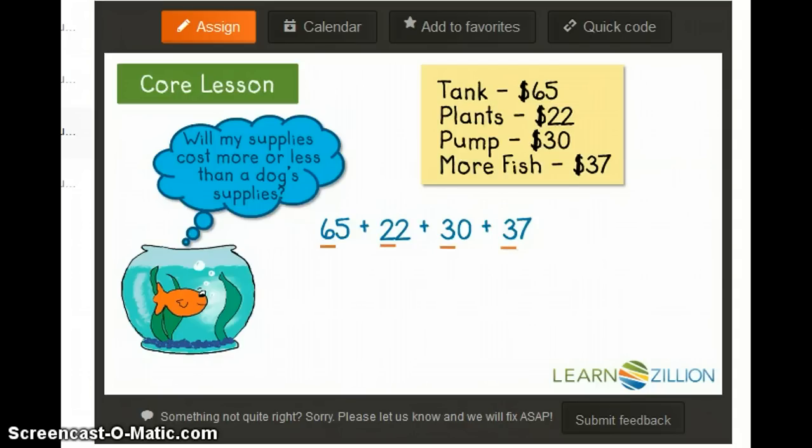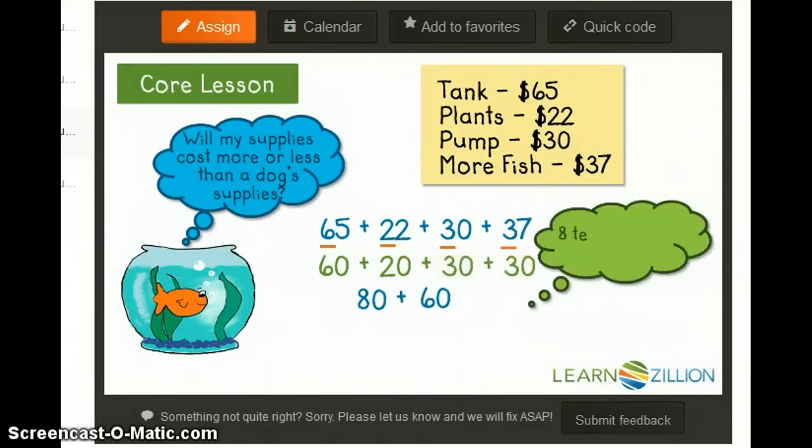When I add the tens together, I have 60 plus 20 plus 30 plus 30. I can add 2 at a time. So 60 plus 20 equals 80, and 30 plus 30 equals 60. I know that 8 tens plus 6 tens equals 14 tens, or 140.